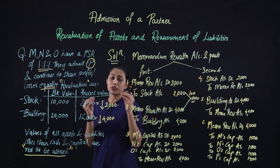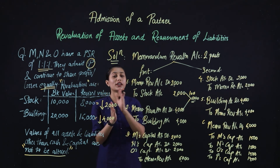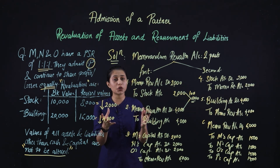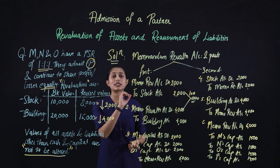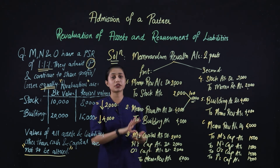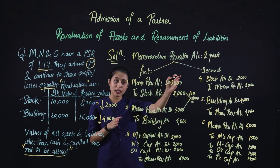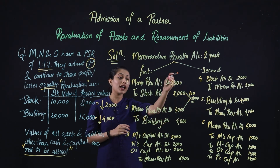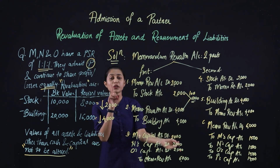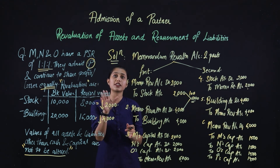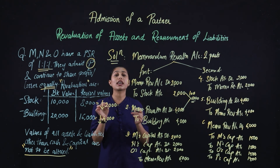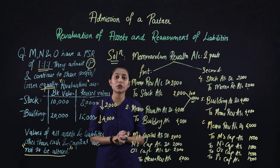To summarize: when maintaining assets and liabilities at book values, prepare a Memorandum Revaluation Account in two parts. In the first part, record all revaluations and distribute the gain or loss among old partners in the old ratio. In the second part, reverse the revaluations and distribute the reversed gain or loss among all partners — including the new partner — in the new ratio. This concept of revaluation of assets and reassessment of liabilities in the event of admission of a partner should now be clear.